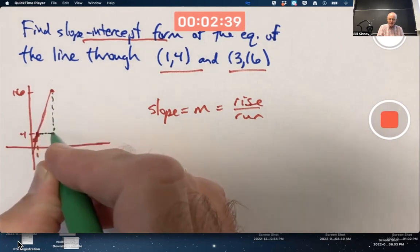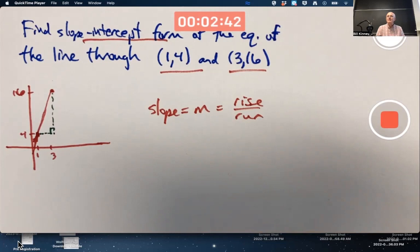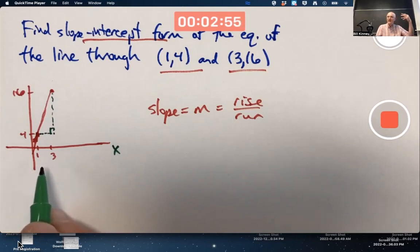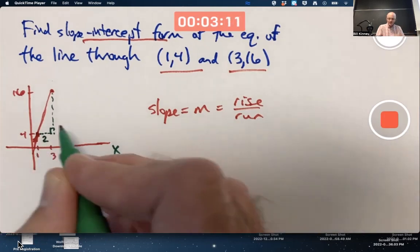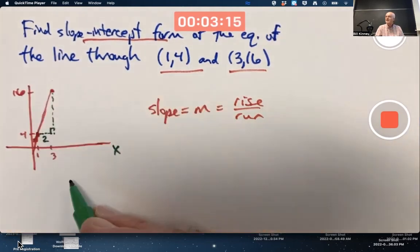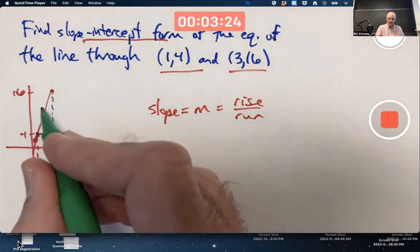You can even add more to your picture to remind yourself what rise and run are. Draw a right triangle in here. Typically, you imagine the independent variable X as increasing, in this case increasing from 1 to 3, moving to the right. So X effectively is going from 1 to 3, it's increasing by 2. So the run is 2.